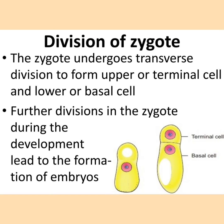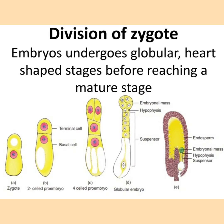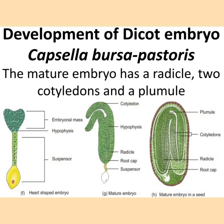Four divisions of the zygote occur during development leading to the formation of the embryo. The embryo undergoes globular and heart-shaped stages before reaching a mature stage. In the image you can see the zygote dividing to form a two-cell stage, four-cell stage, eight-cell stage, then a globular embryo, then a heart-shaped embryo, which slowly matures and gets embedded inside the endosperm. The mature embryo has a radicle, two cotyledons, and a plumule.